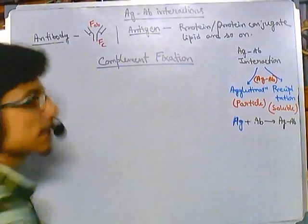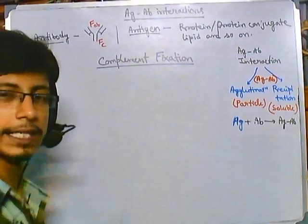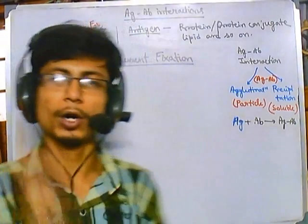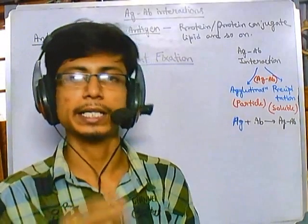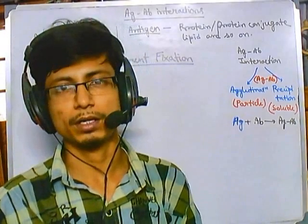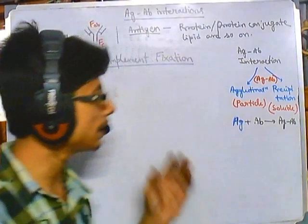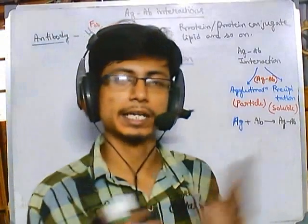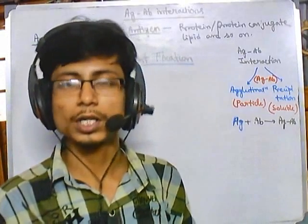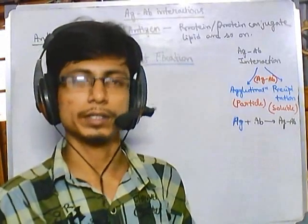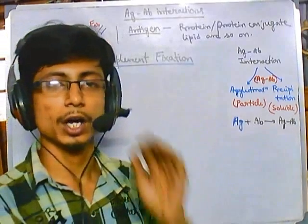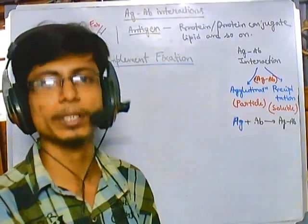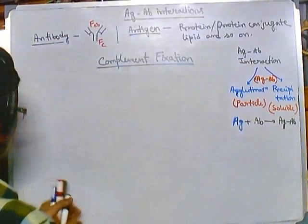They help us establish the antigen-antibody complex and engulf, degrade, and bust those complexes. The complement fixation assay is the most important and best assay to detect antigen-antibody complexes present in a sample. It is the best assay for identifying antigen-antibody complexes in your sample.